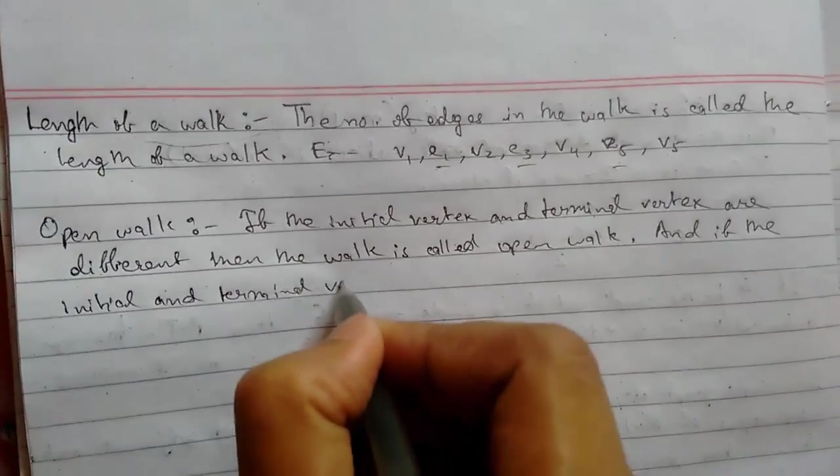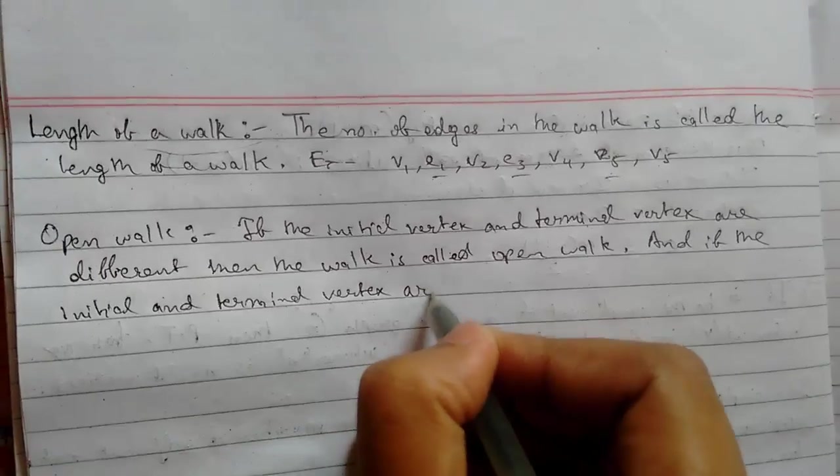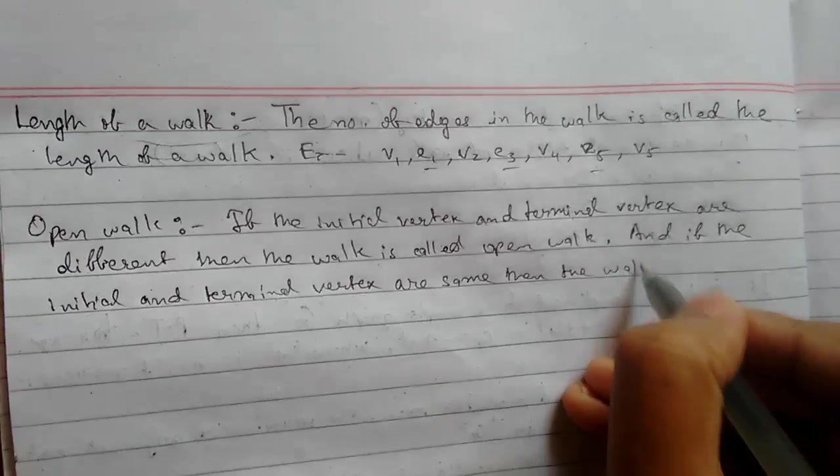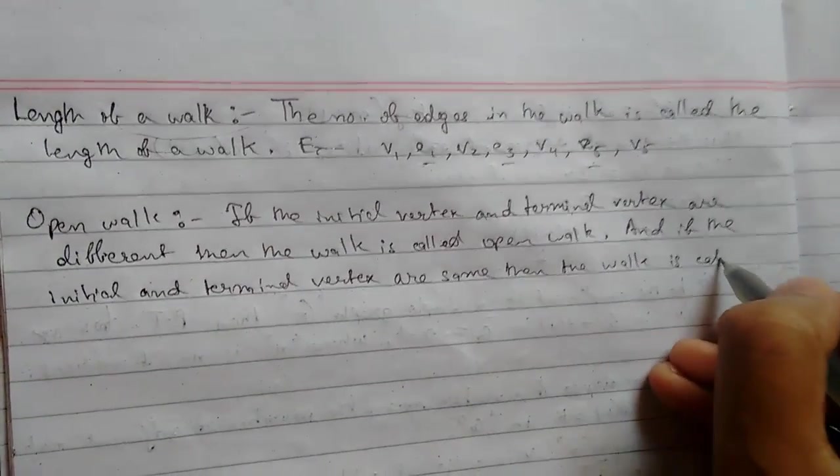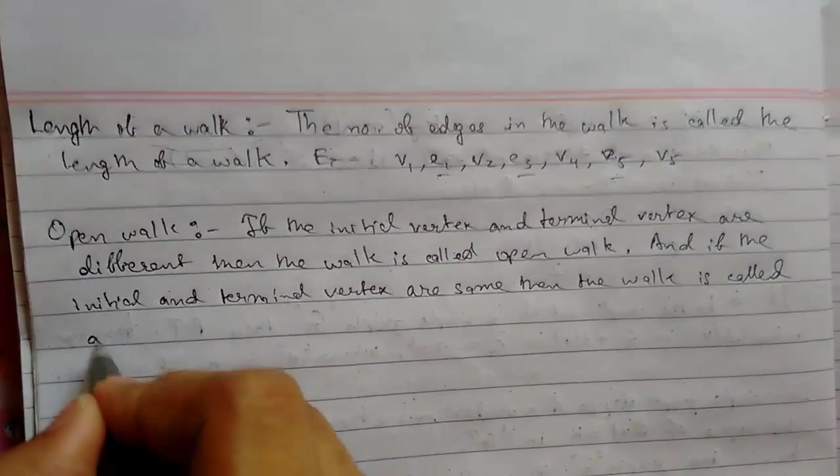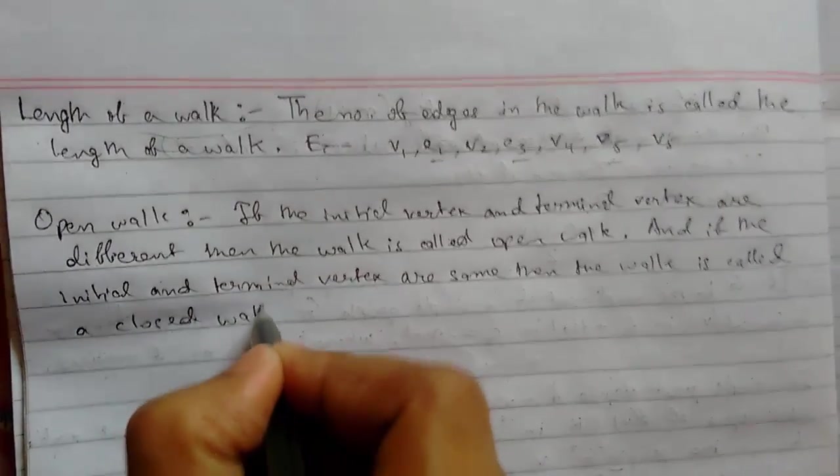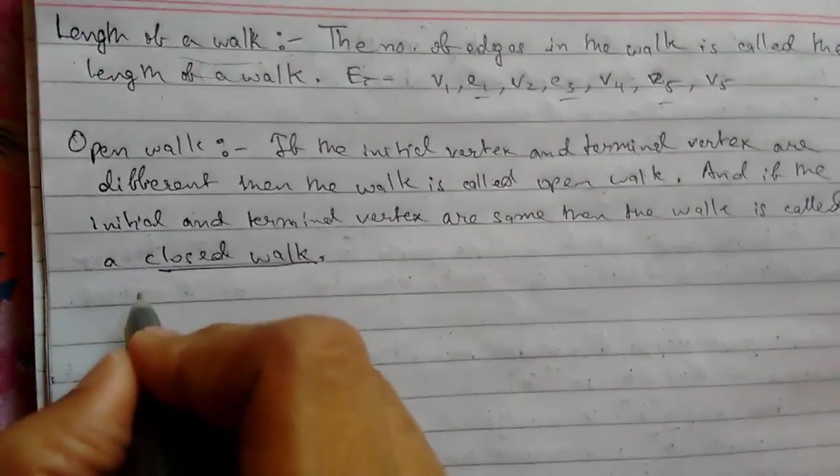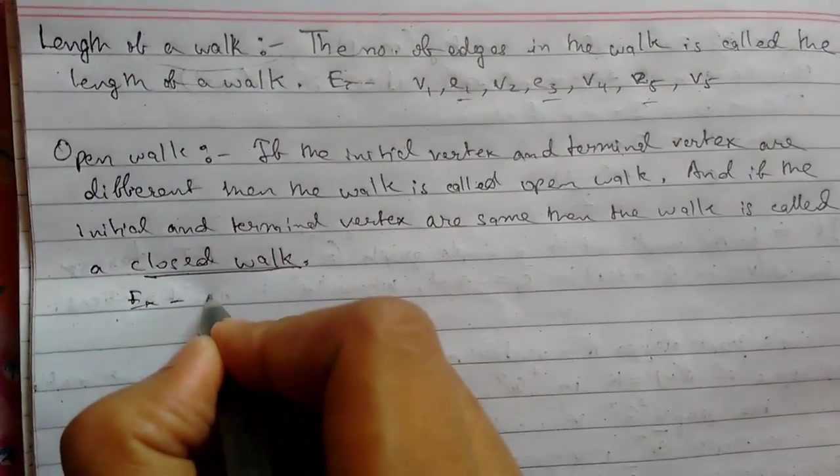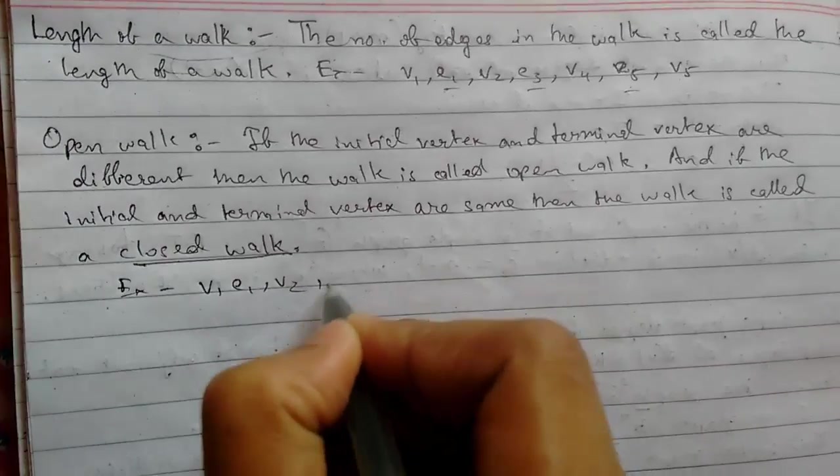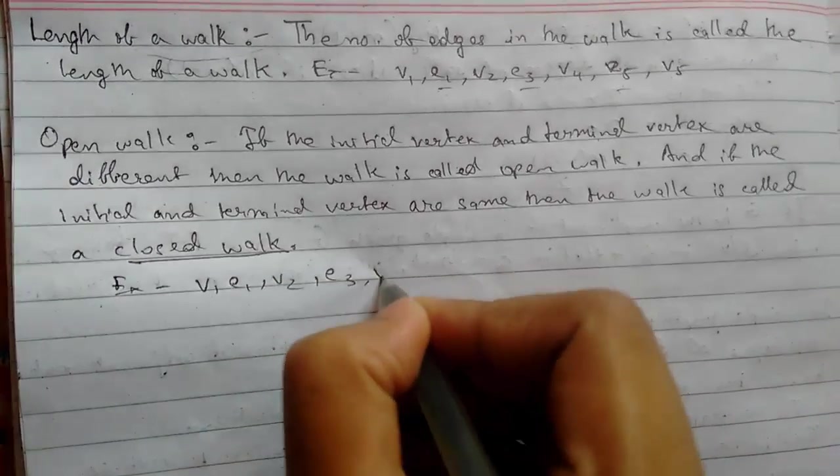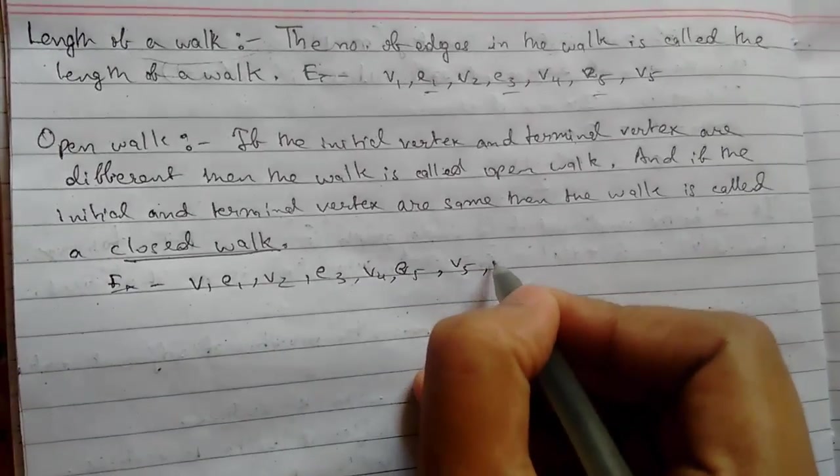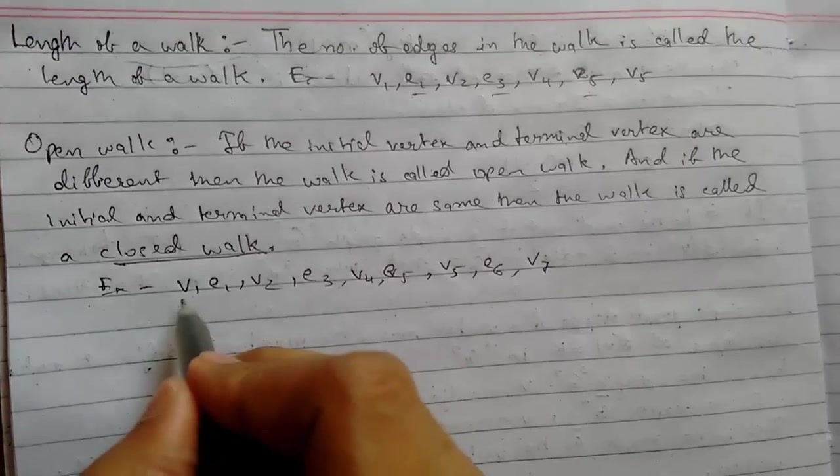...then the walk is called a closed walk. So what we mean is like this: suppose we have a walk like this: v1, e1, v2, e3, v4, v5, e5, v5, e6, v7.